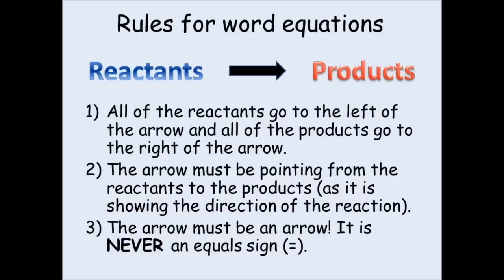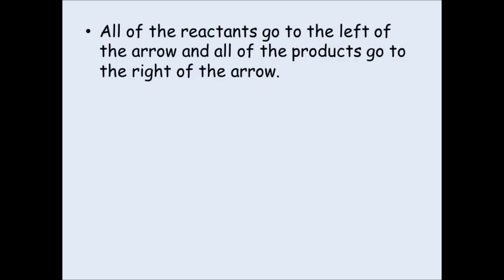The third rule is that the arrow is an arrow. It's never an equal sign, which a lot of people have a tendency to put. So as I said, we'll come back to the first rule, that all of the reactants must go on the left of the arrow and all of the products must go on the right of the arrow. Well, this seems like a simple rule, but when you're writing word equations in your exercise book, you can break this rule without really realizing it.